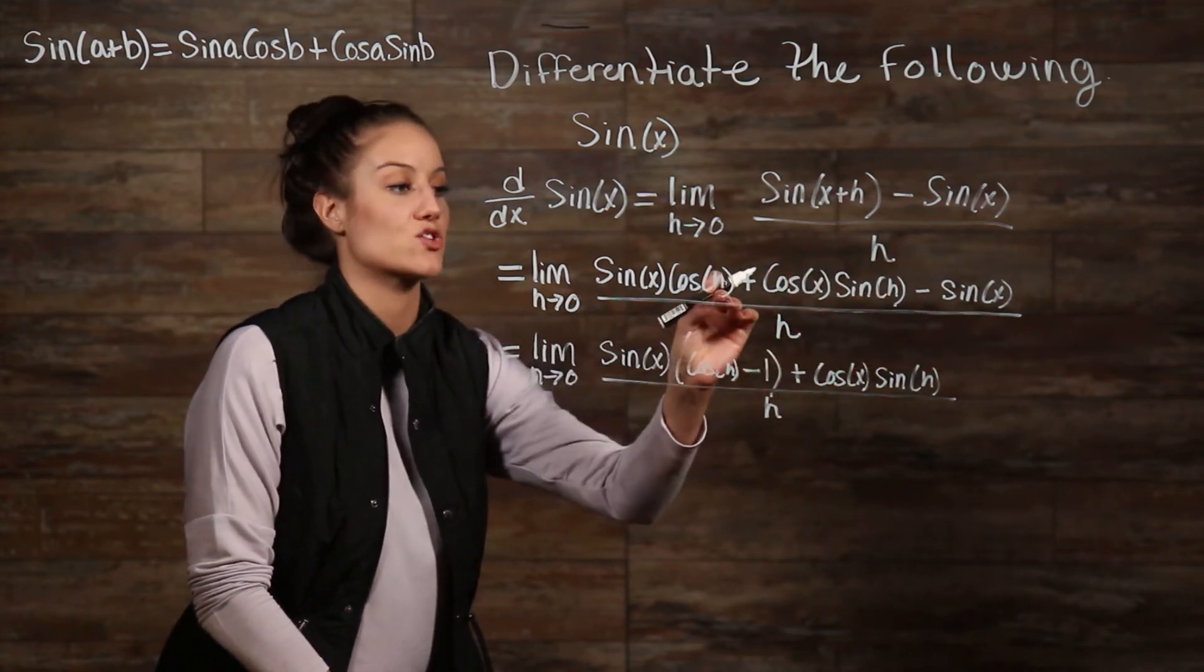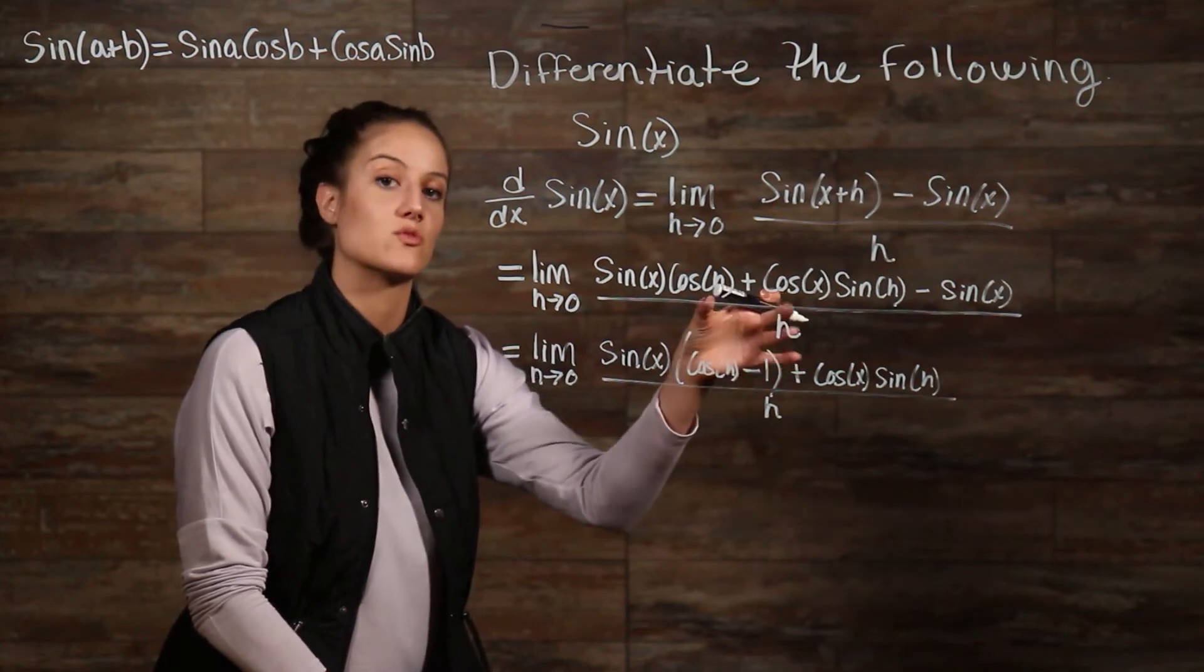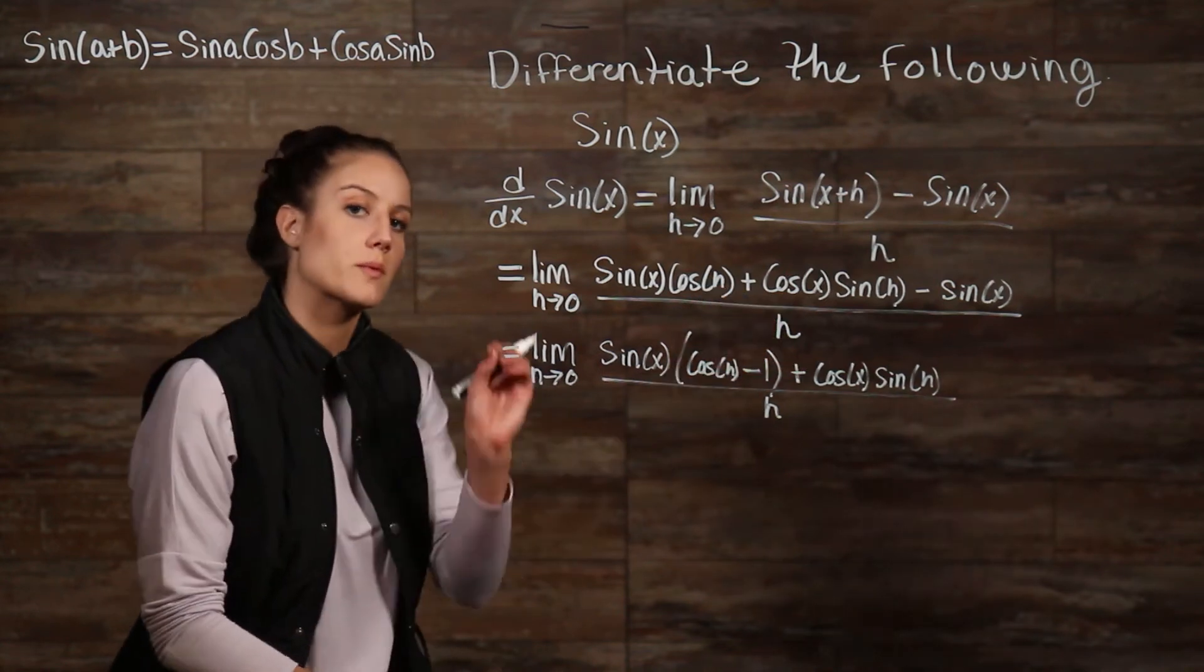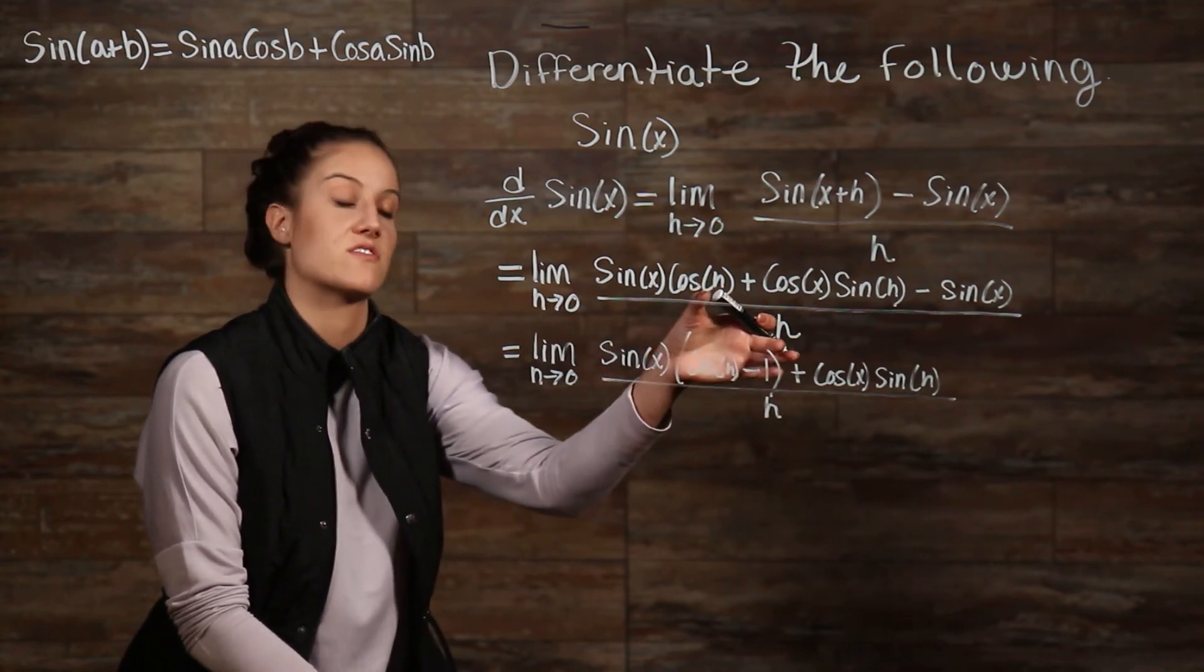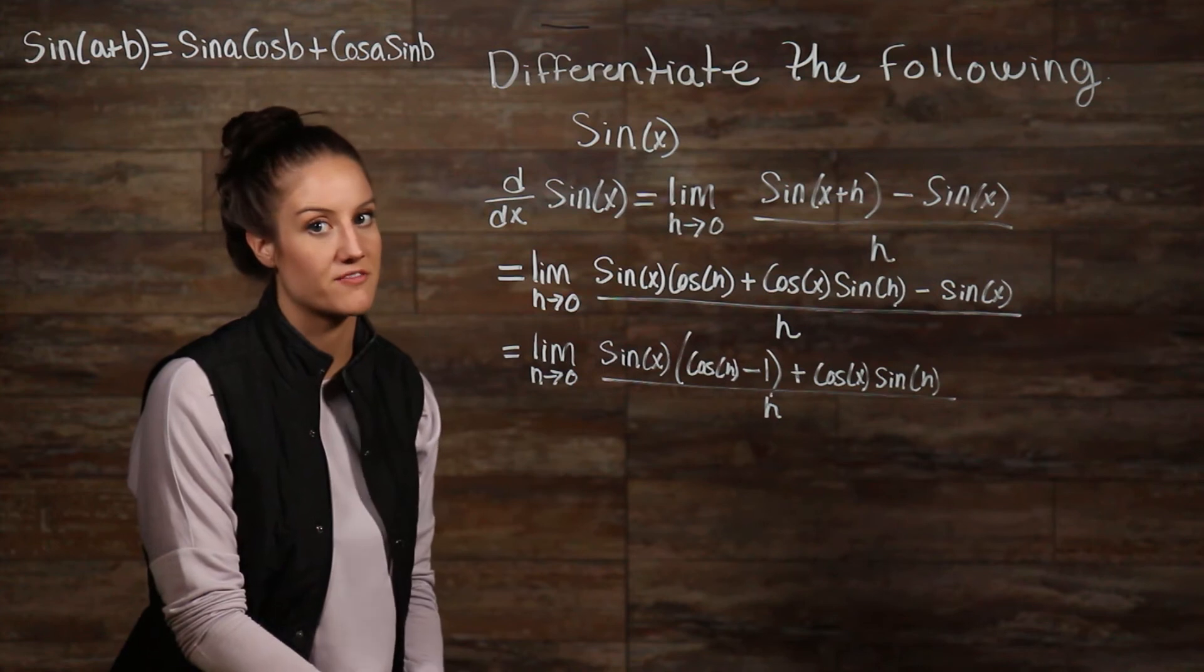And I want an h right here, so I have h over h, so it will look like one of the facts. Remember, like in our last problem, the variable and the coefficient in front of the variable need to be the same thing for it to look like my fact.